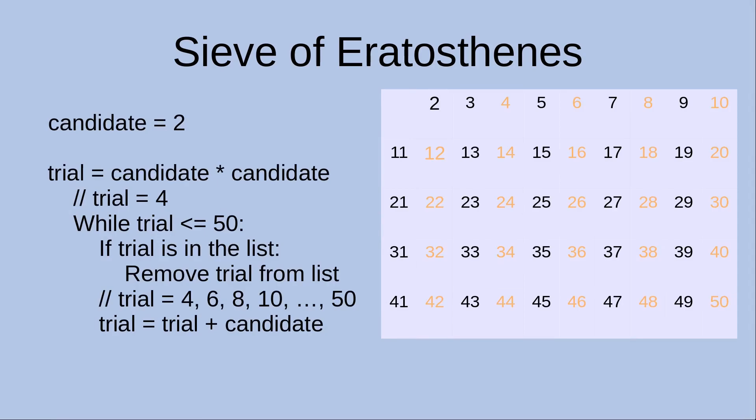Now let us see the case when the candidate becomes 2. The trial number becomes the square of the candidate, which is equal to 4. While the trial number is no larger than 50, we do the if statement. If the trial is in the list, we remove it. So the trial numbers are simply 4, 6, 8, 10, up to 50 — all the even numbers starting with 4.